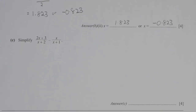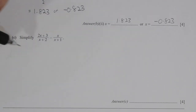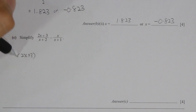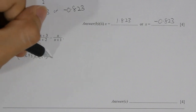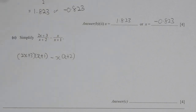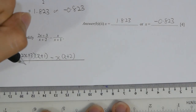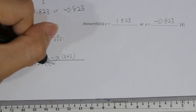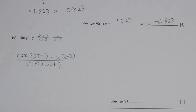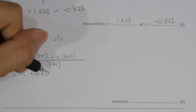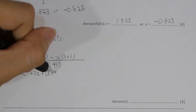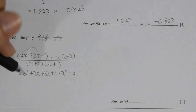For question C, first change the denominators to the same and combine them together. After calculation, the numerator is x² plus 3x plus 1. Since this cannot be factorized further, the answer will be (x² + 3x + 1) over (x + 2)(x + 1).